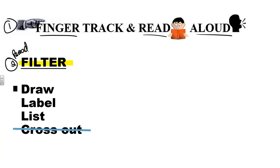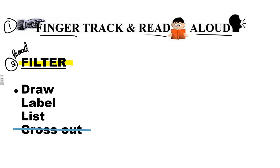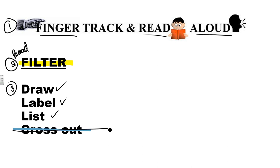Step three: you go back and reread the problem for a third time. This time you attempt to draw the problem, you label your drawing, you make a list of information that doesn't belong in the drawing, and as you account for all your numbers, you want to physically cross things out. We're going to model these steps going through partial explanations of all the word problems of the Unit 5 Study Guide.